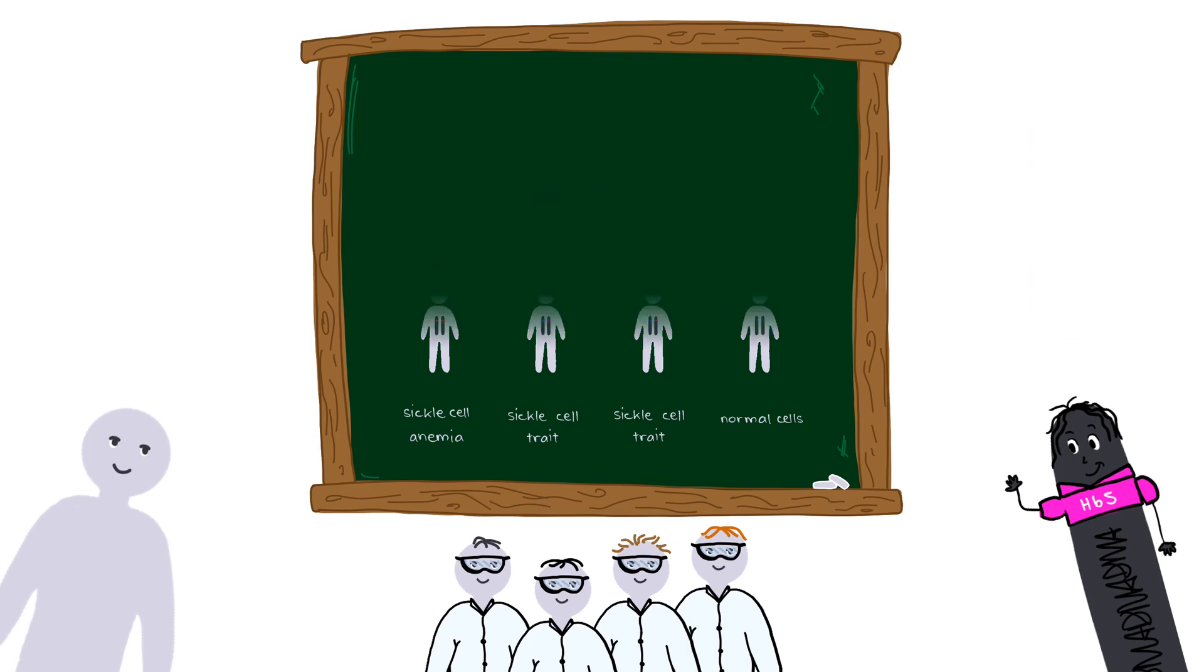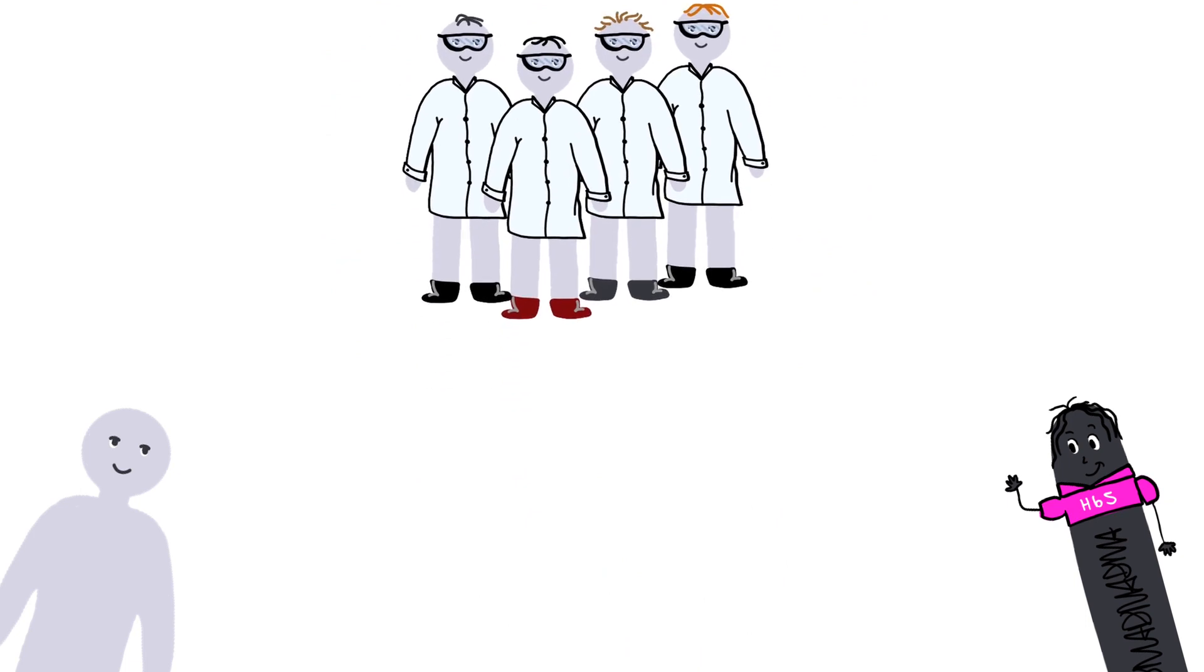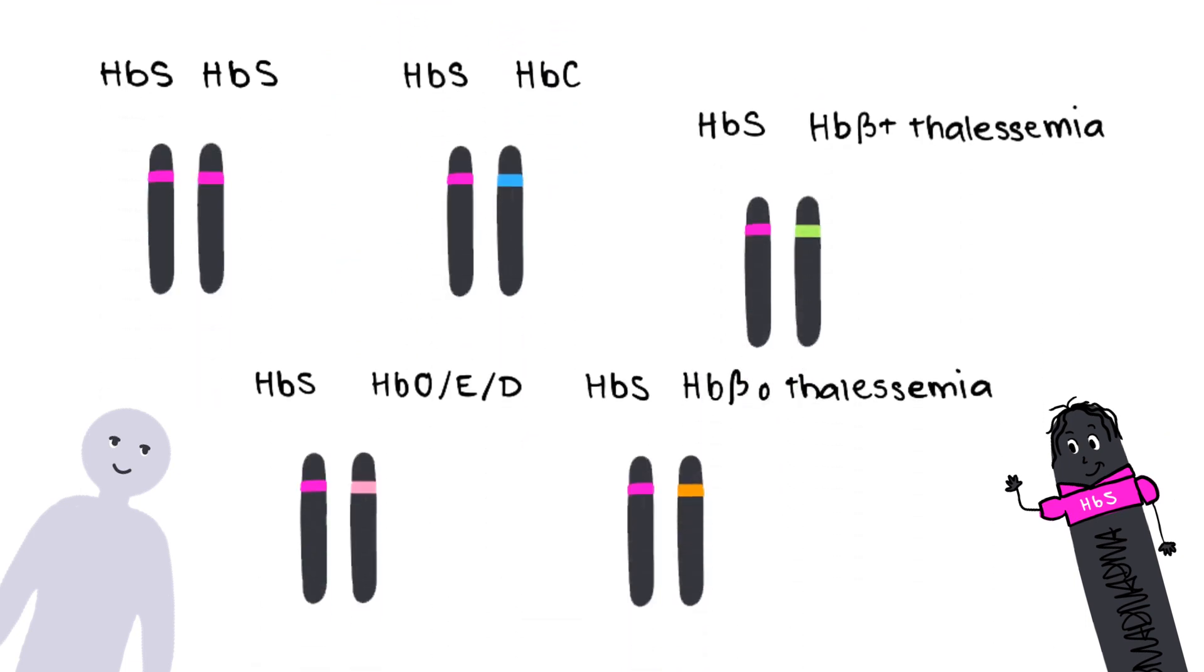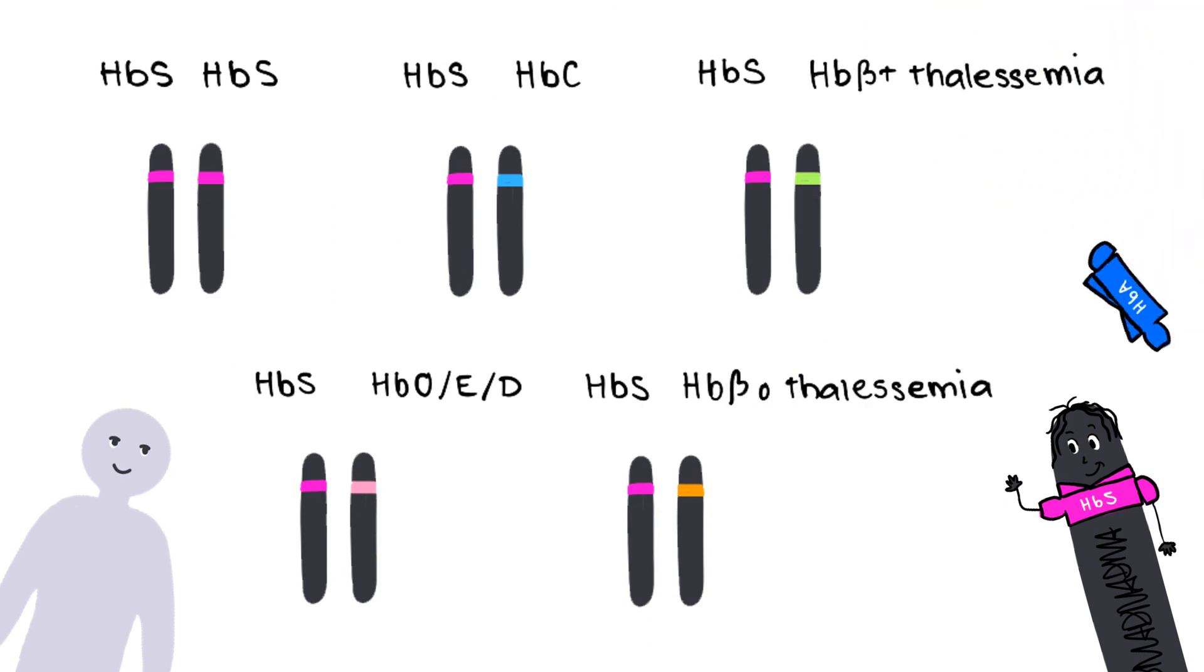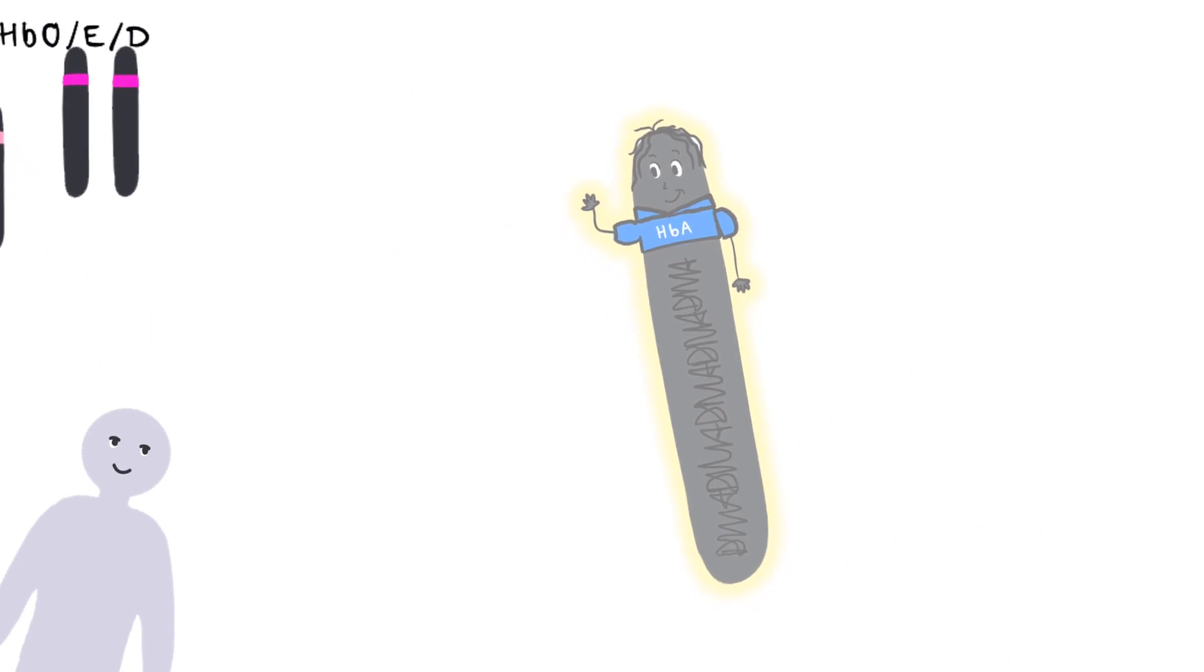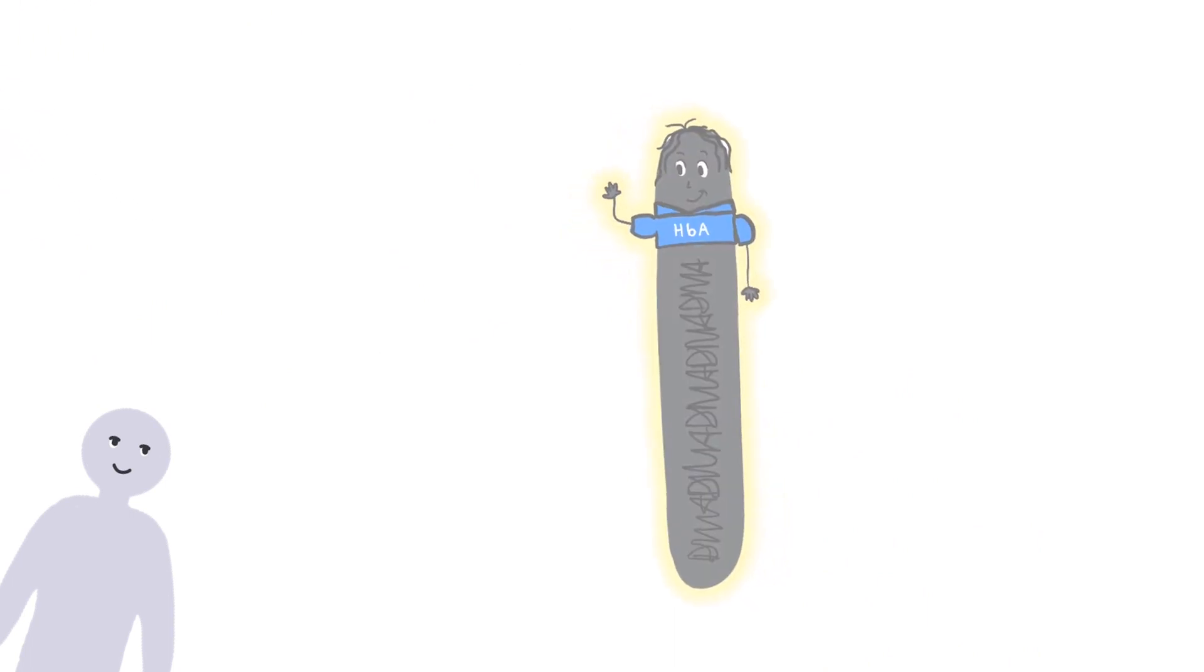This knowledge has allowed scientists to understand the inheritance of other types of sickle cell disease and research possible treatments. Current research is looking at transplanting bone marrow that produces red blood cells containing normal HBA hemoglobin into individuals with sickle cell anemia. Research is also being done on how to fix the defective HBS mutation using gene editing technology.